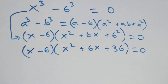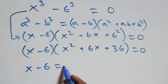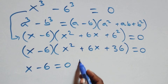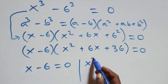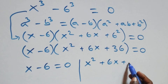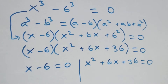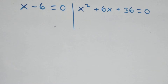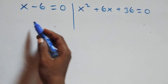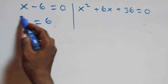We have two possible cases. First: x minus 6 equals 0, or x squared plus 6x plus 36 equals 0. Solving the first case gives x equals 6, which is a real solution.